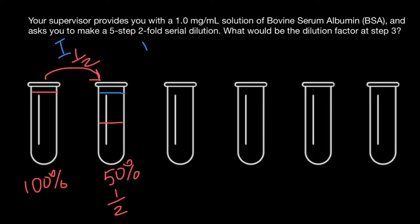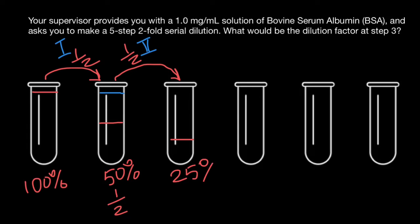Now step number two. We also dilute by one half. Take a look — one half of this volume. One half of one half is going to be one quarter — 25% is going to be the concentration, one quarter.